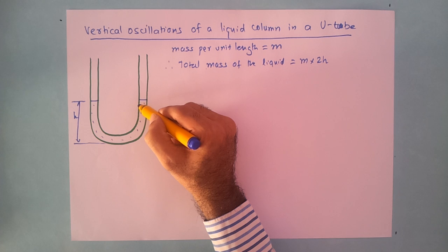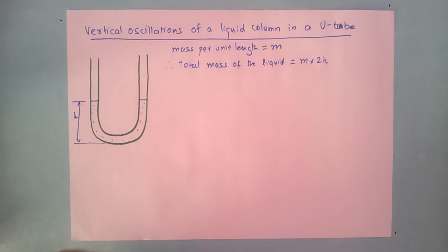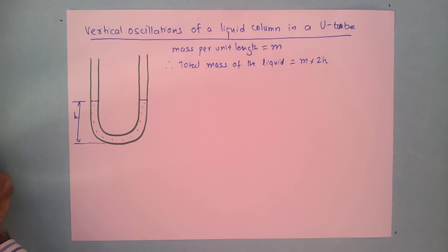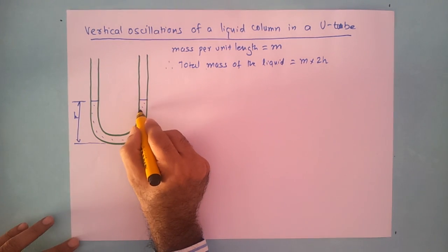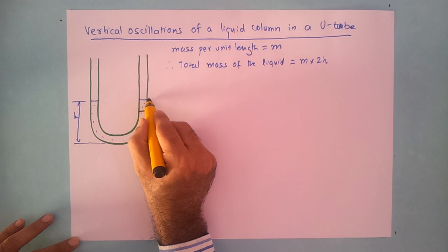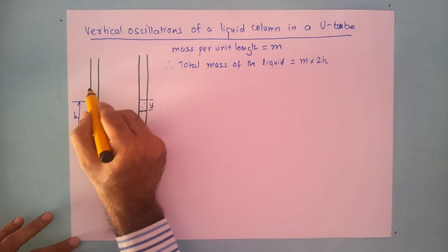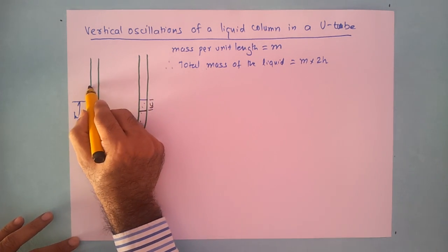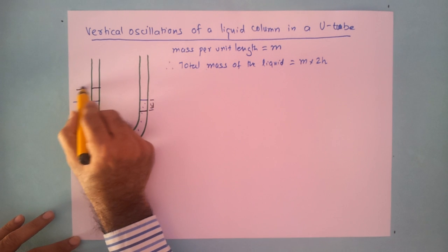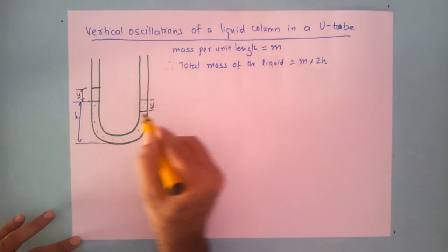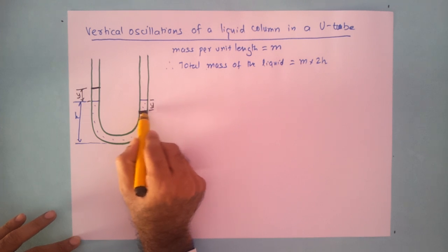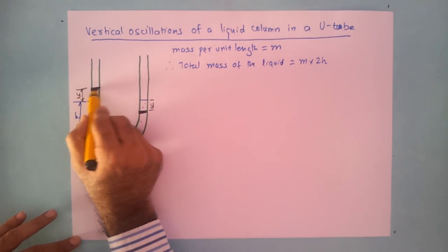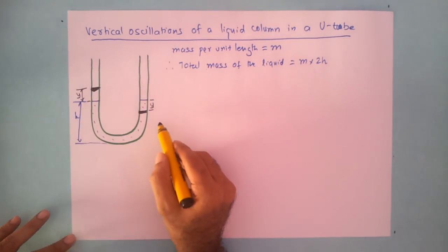Now let us consider the situation where we apply force and the liquid level rises on one side. The liquid goes down on one side by y, so the level rises on the other side by y as well. The new levels are now displaced by y on each arm.